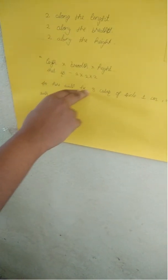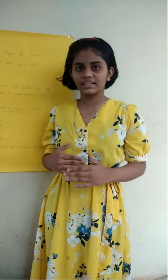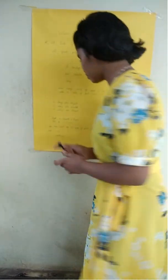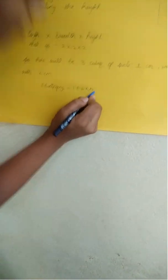So there will be 8 cubes of size 1 cm which will make a cube of 2 cm. This is just similar to finding the volume of a cube — multiplying length into breadth into height. That's why they are known as 3-dimensional numbers.